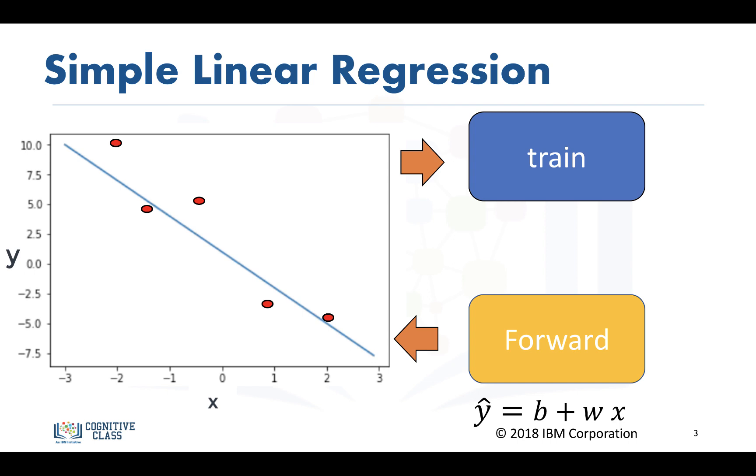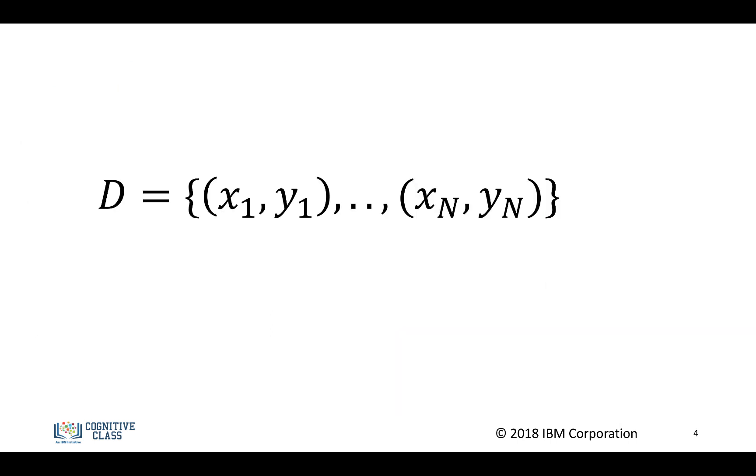For example, we can make a prediction if x equals 1.5 and get the value of y, or if x equals negative 2. Our actual dataset is a set with different values for x and different values for y.